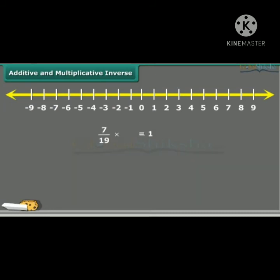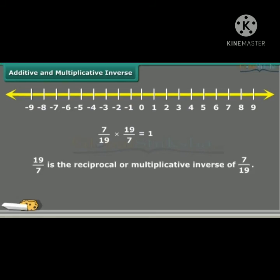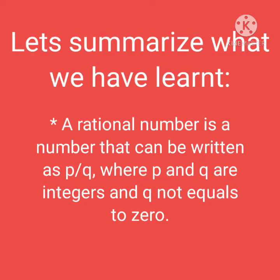Just think — by which number should we multiply 7 upon 19 to get the product 1? Obviously, 19 upon 7. So we say that 19 upon 7 is the reciprocal or multiplicative inverse of 7 upon 19.